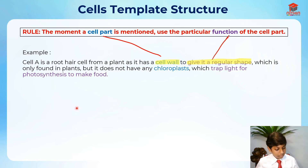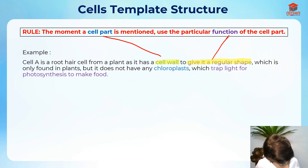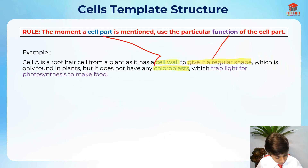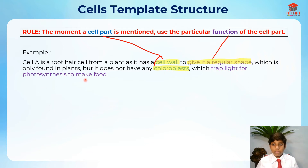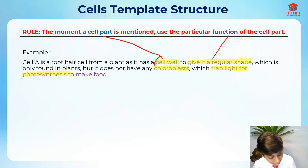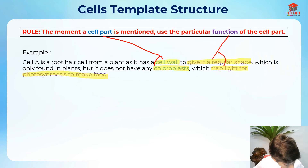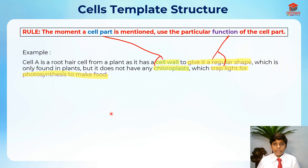After that, I'm stating which is only found in plants, but it does not have any chloroplast — this is again a cell part — which traps light for photosynthesis to make food. That is the function. This is how we must structure the answering.